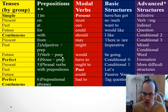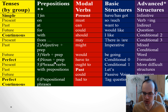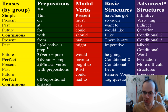Verb plus preposition is also a problem for many students. How would you say it: 'It depends on me' or 'It depends from me'? We say 'It depends on me' — depend on. You also need to know noun plus prepositions: 'reason about' or 'reason for'? We say 'reason for' — 'What's the reason for this answer?'